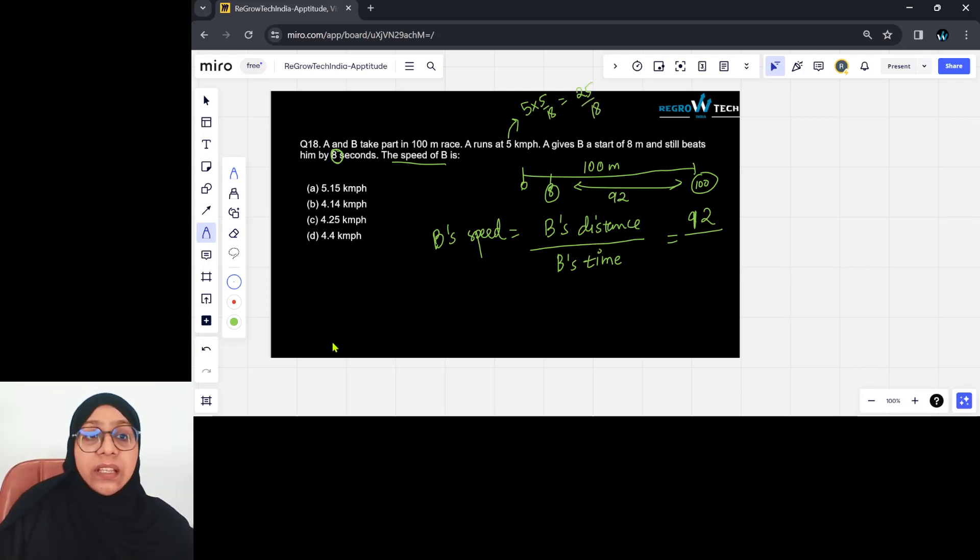I'm going to calculate A's time equals 100 divided by 25 upon 18, which is distance divided by speed. So 25 ones are 25, 25 fours are 100. 18 times 4 is 72 seconds. So A is going to complete the distance of 100 meters in 72 seconds.